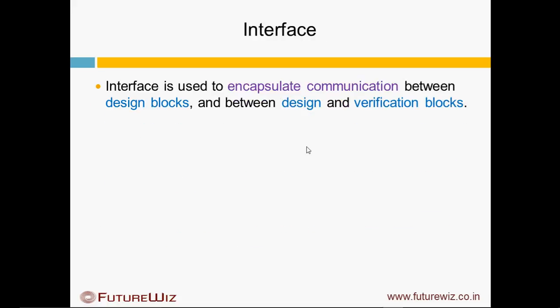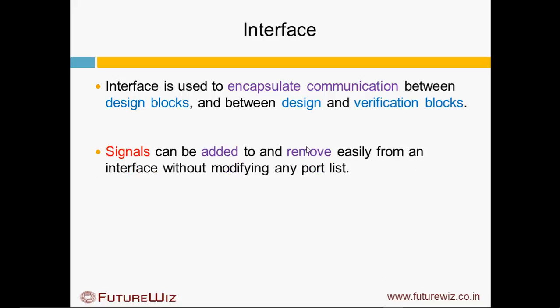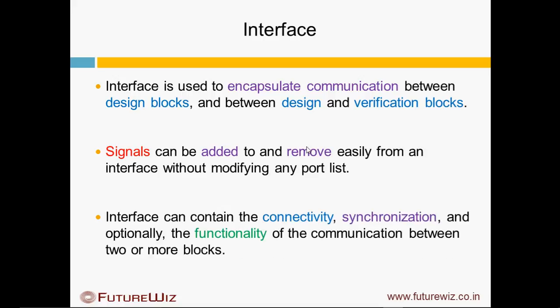Interface is used for encapsulating the communication between Design Blocks as well as Design and Verification Blocks. Signals can be added and removed easily from an interface without modifying any of the ports. Interface can contain the connectivity, synchronization, and optionally the functionality of communication between two or more blocks.